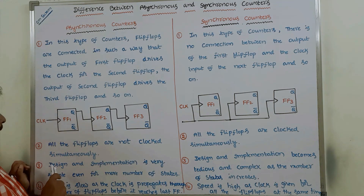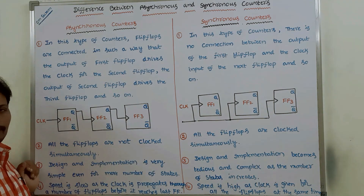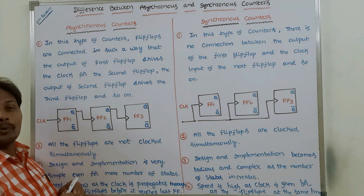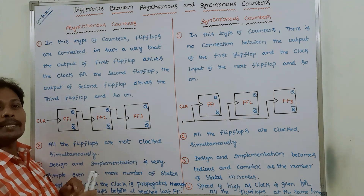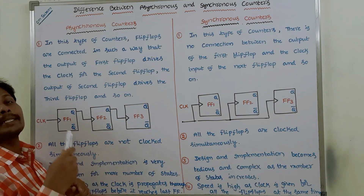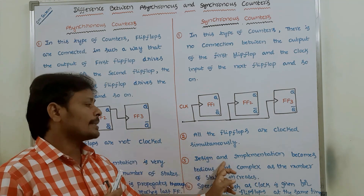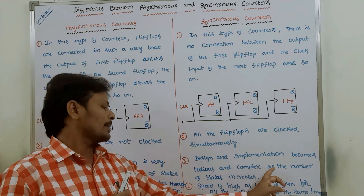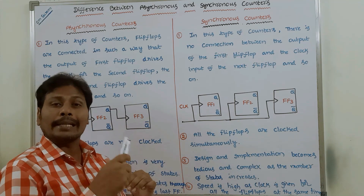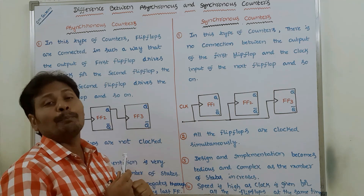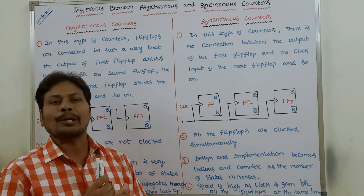Third point: in asynchronous counters, design and implementation is very simple, even for more number of states. Whereas in the case of synchronous counters, design and implementation becomes tedious and complex as the number of states increases, making it very difficult when the number of states grows large.